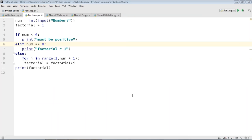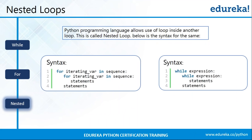Python allows us to use a loop inside another loop — this is called nested loops. You can use a for loop inside a for loop, a while loop inside a while loop, a while loop inside a for loop, or a for loop inside a while loop. We'll look at examples of all these variations.